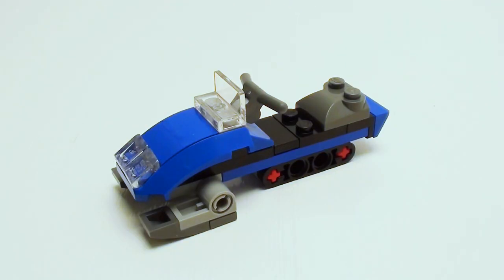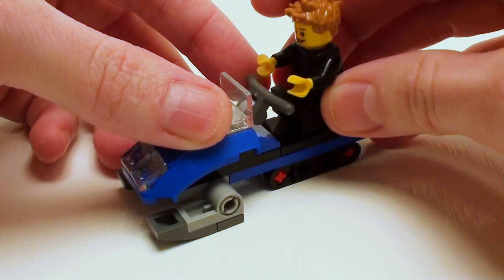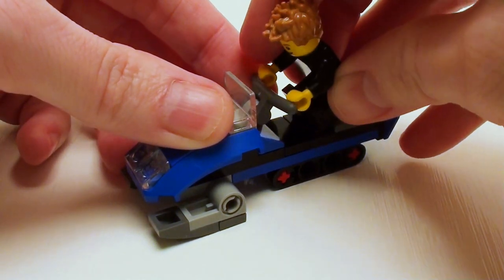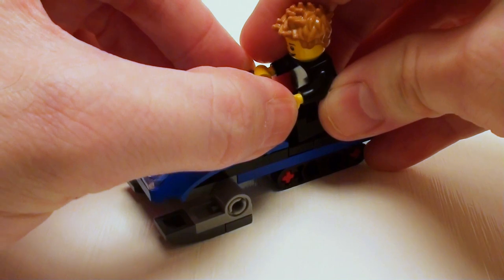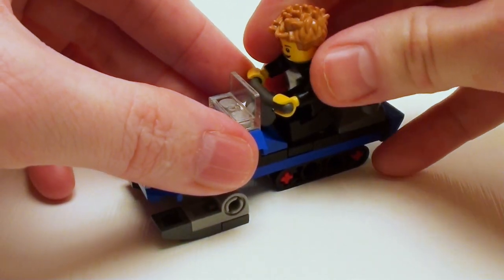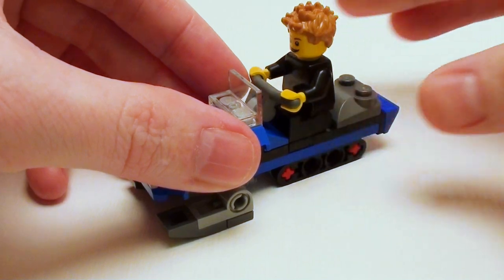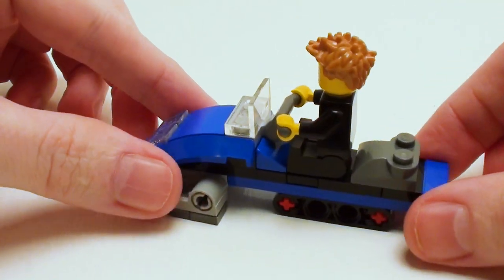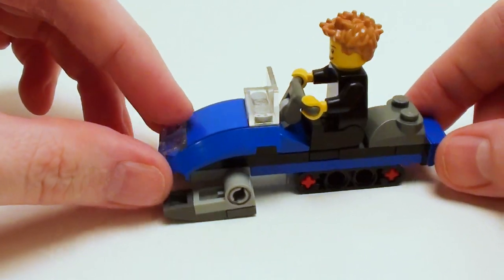The snowmobile is compatible with LEGO minifigures. Here I have Jay the Surfer—have him grab hold of the handlebars and take a seat. As you can see, he's ready to go.